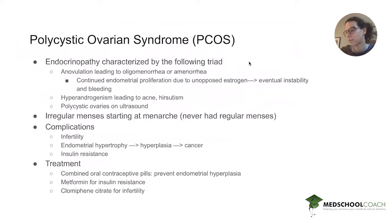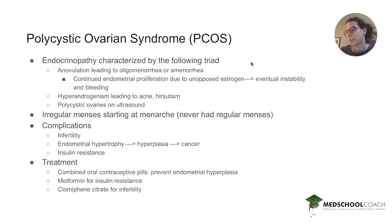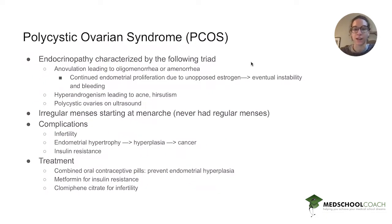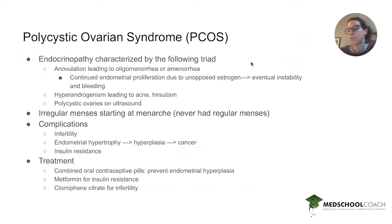Polycystic ovarian syndrome is an endocrinopathy characterized by the classic triad: anovulation leading to oligo- or amenorrhea, hyperandrogenism, and polycystic ovaries on ultrasound. We don't have the ultrasound here, but we can be pretty sure based on those first two findings and the bilaterally enlarged ovaries that those are probably polycystic.